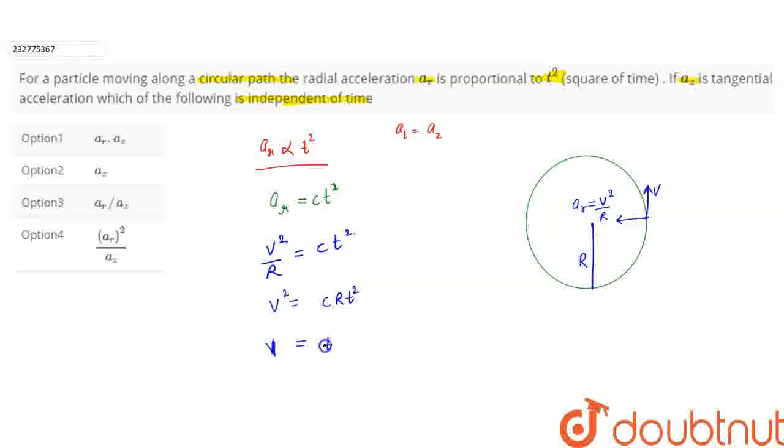So the velocity value becomes v equals t with the other part under root as c into r. Now, tangential acceleration az, we can write as dv by dt.